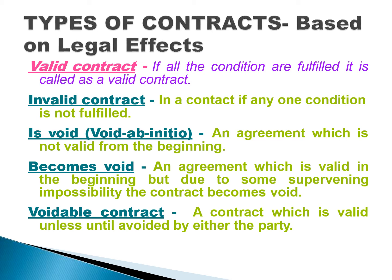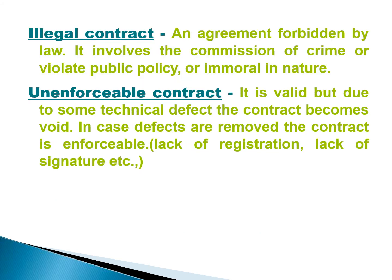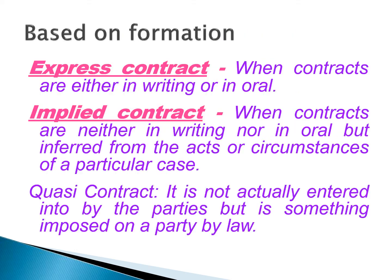A voidable contract is one which is valid unless avoided by the other party — it is at the option of one party to cancel it. An illegal contract is an agreement forbidden by law, falling in the category of crime or violation of public policy. An unenforceable contract is valid but due to some technical defect it cannot be enforced — for example, if registration was not done, or proper signatures of the parties are missing.